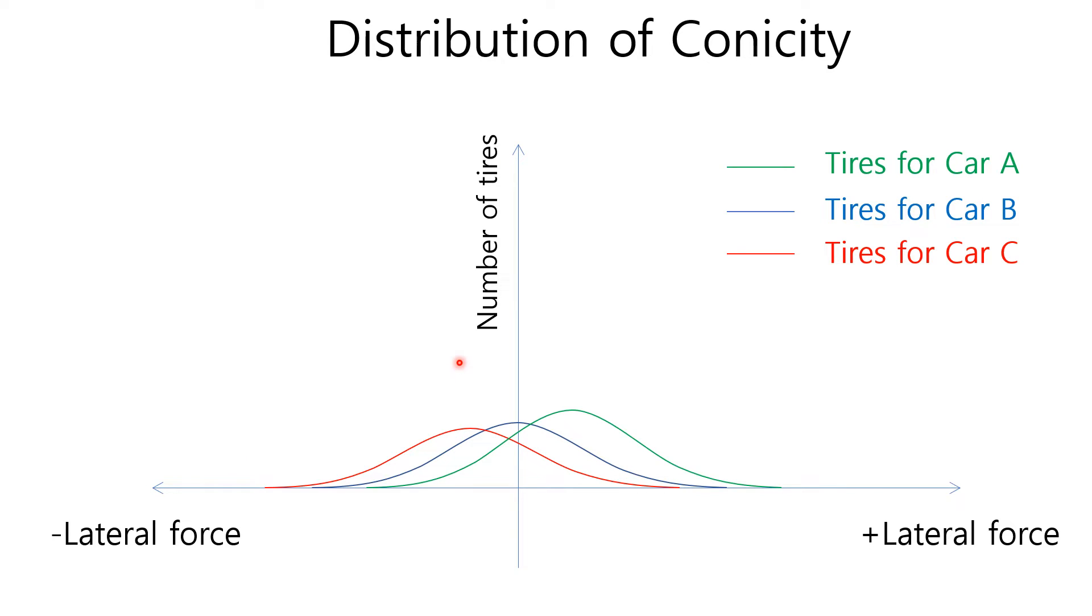Distribution of conicity goes different tire by tire. For example, tires per car A shows green distribution, tires per car B shows blue distribution, and tires per car C shows red distribution, and so on.